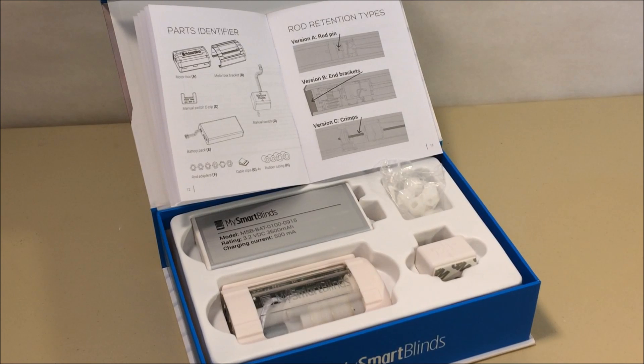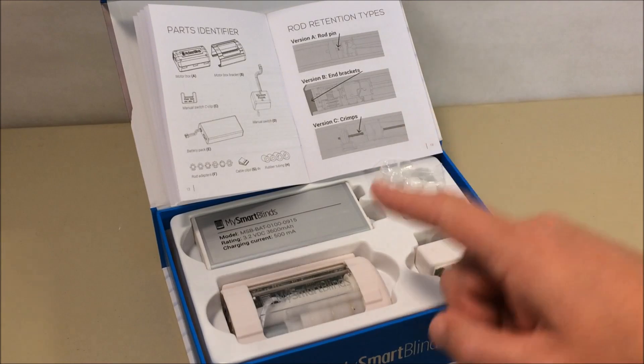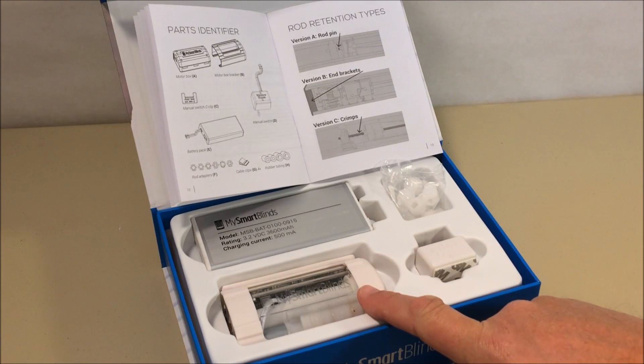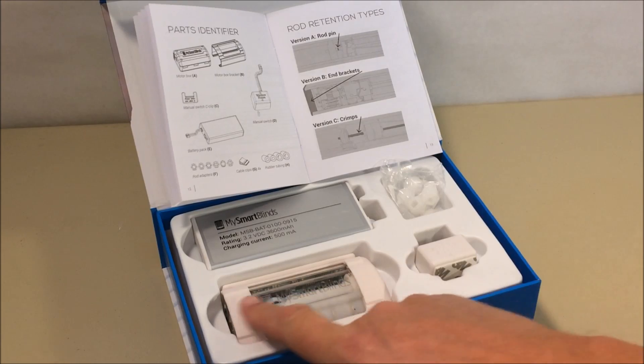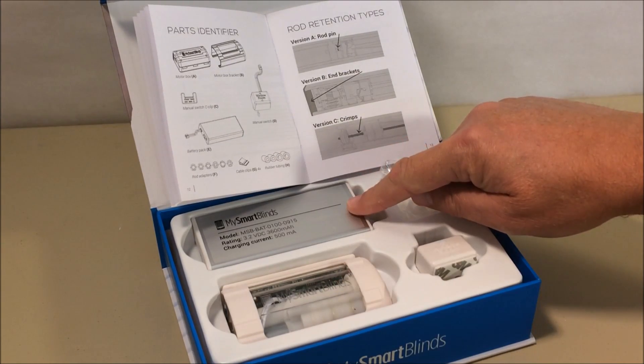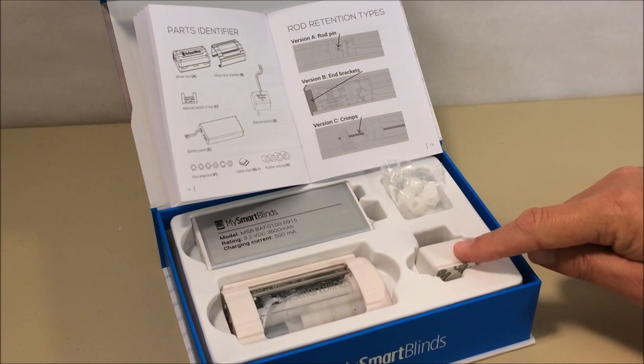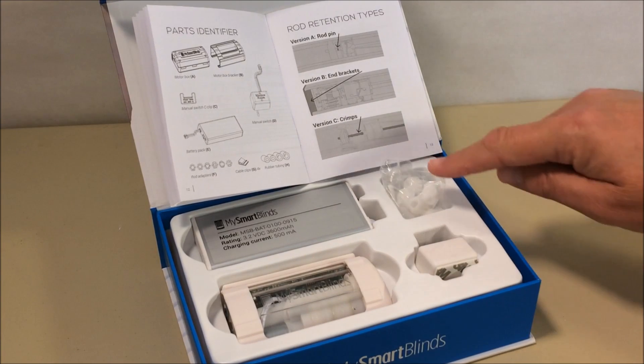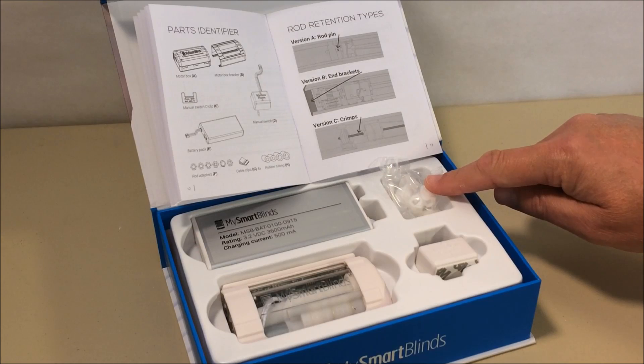Here's a quick look at what comes inside the box. You get what they call a motor box and the motor box bracket, combined into one unit right here. You also get a battery pack, a device called a manual switch, and then a variety of rod adapters or rubber tubing.